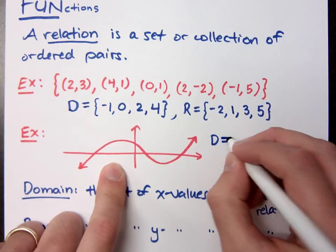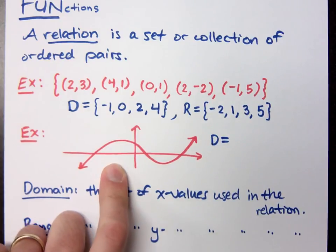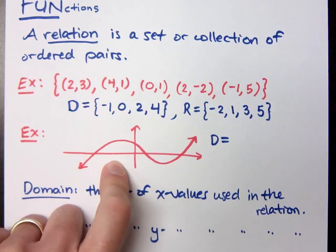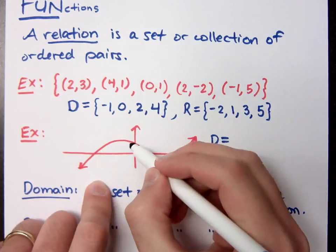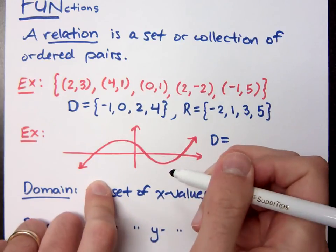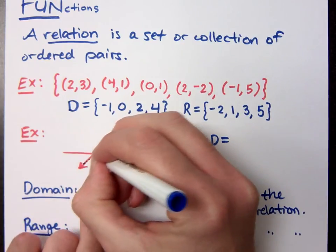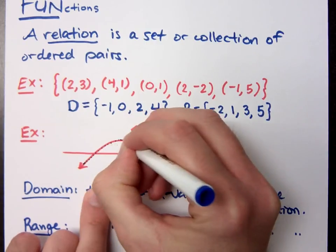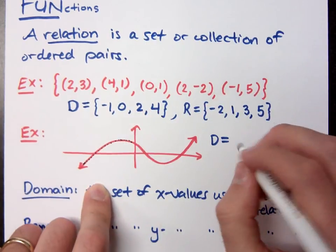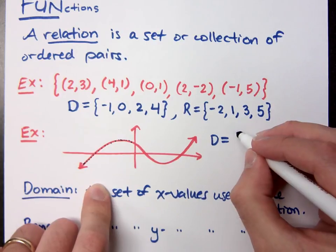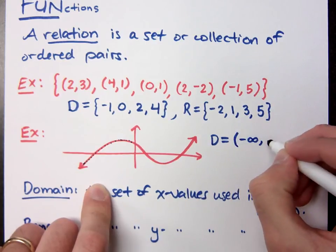Now, what about this picture right here? What's the domain? Tell me the set of x values that I'm using in this picture. I'm using everything, right? Right. You cannot say I'm only talking about the points where it crosses the axes. That's not what I'm saying. Notice that you're using all these little points right here, right? Right. So what are the x values that make this up?